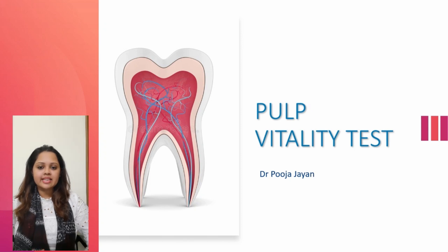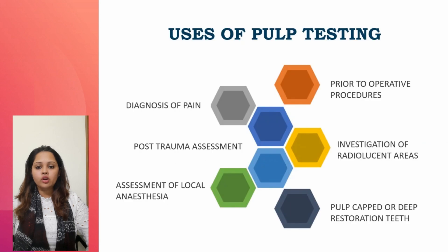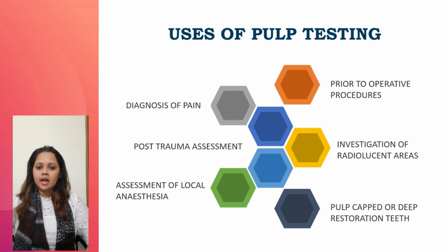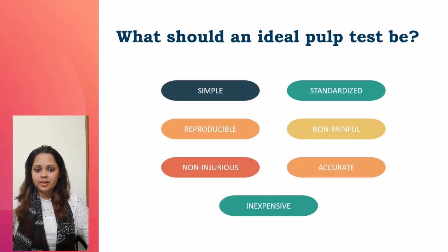Welcome to the second video in the series on steps in endodontic treatment. In this session we'll be focusing on pulp vitality tests. In the previous video we discussed the importance of an accurate diagnosis. One of the key decision-making steps during diagnosis which determines the treatment plan is the pulp vitality test. Pulp testing basically involves an attempt to generate a response of the sensory neurons to external stimuli. Before we move on to the details of various pulp tests, we need to understand what sensitivity and specificity of a test mean.